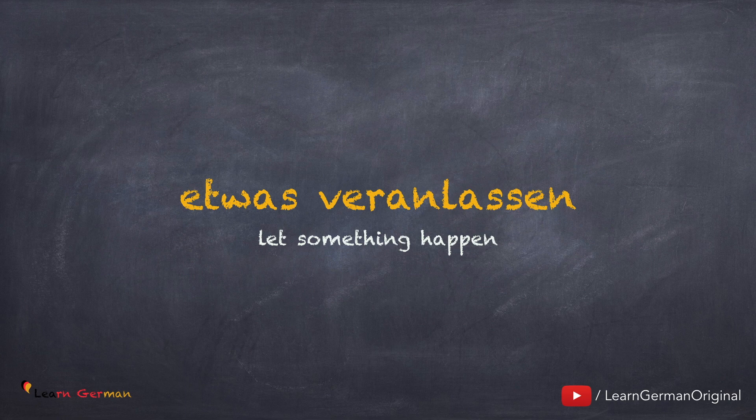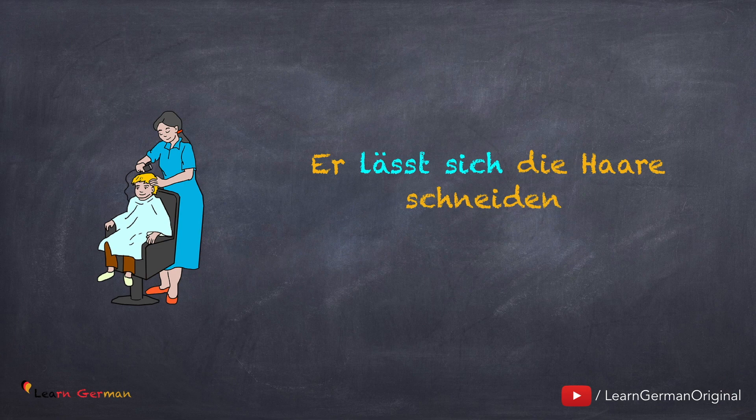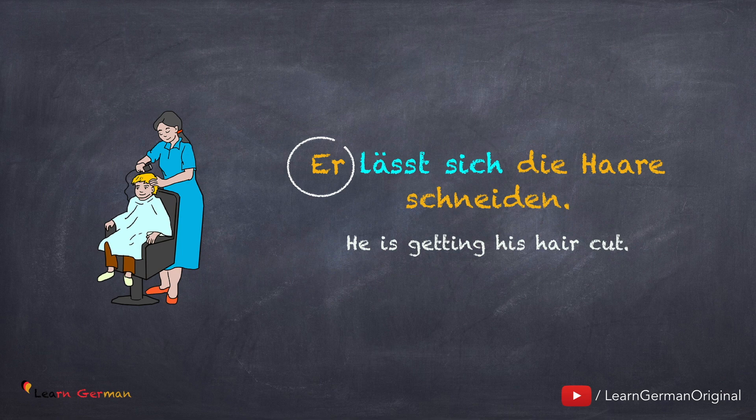Hier hat lassen die Bedeutung etwas veranlassen. Zum Beispiel: er lässt sich die Haare schneiden. Hier hat man einen aktiven Täter, das heißt er veranlasst, dass jemand ihm die Haare schneidet. So dieser Satz ist aktiv und nicht passiv.